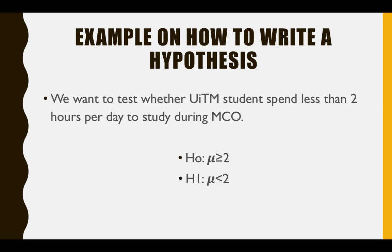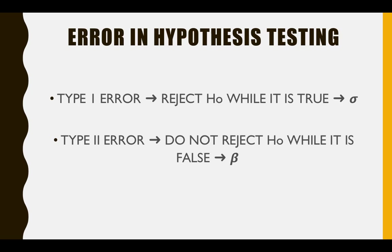Example three: We want to test whether UITM students spend less than two hours per day studying during MCO, or Movement Control Order. This statement is our research hypothesis H1 — mu is less than two hours. H0, the null hypothesis, states that mu is more than or equal to two hours. We want to reject H0 and prove that H1 is true. In order to prove H1 is true, we have to reject the null hypothesis.